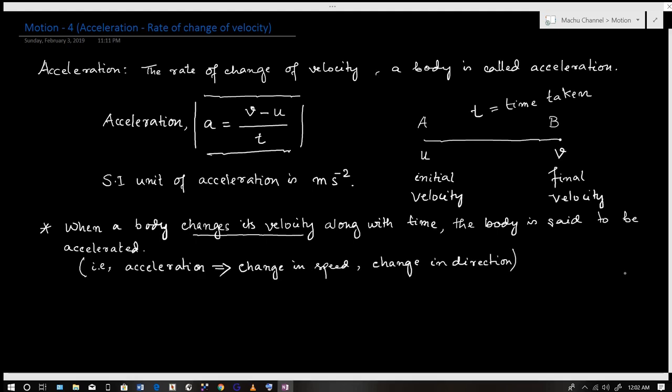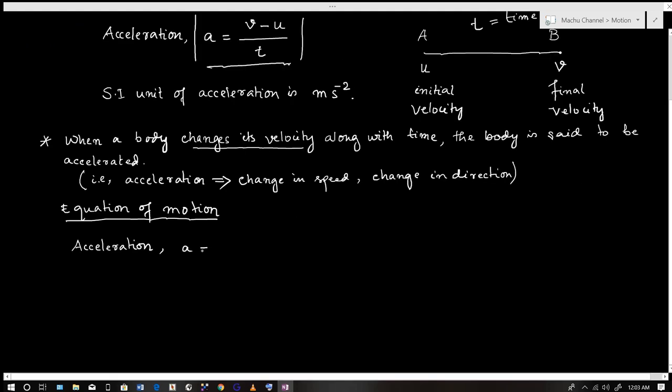From the acceleration formula a equals v minus u divided by t, we can derive the equation of motion. Multiply both sides by t: at equals v minus u. Then add u to both sides: u plus at equals v.